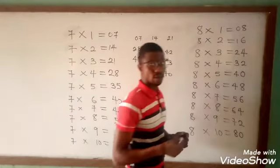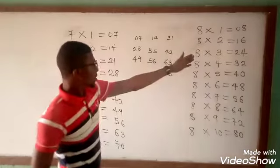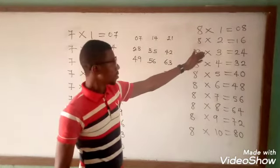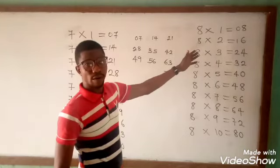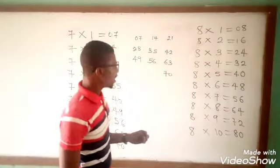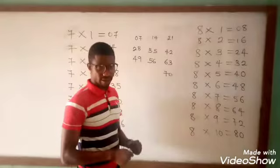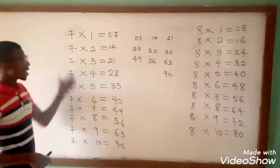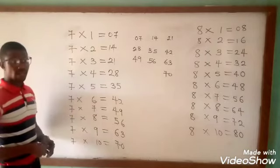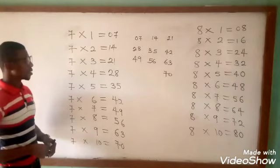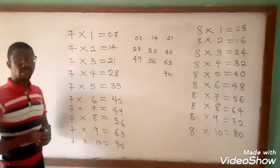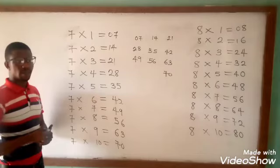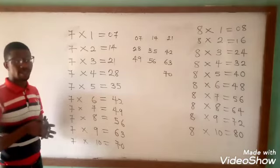This is the multiplication trick for the number 8 against any number running from 1 to 10, and that of 7 against any number running from 1 to 10. Thank you very much for watching. Stay blessed.